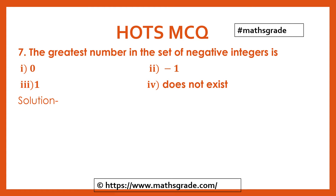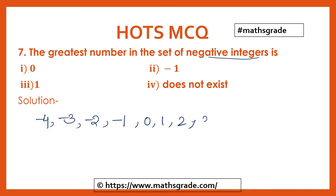Now question number 7: The greatest number in the set of negative integers. Negative integers start with minus 1, minus 2, minus 3, minus 4, and so on to the left of 0 on the number line. The greatest number from the set of negative integers is minus 1.